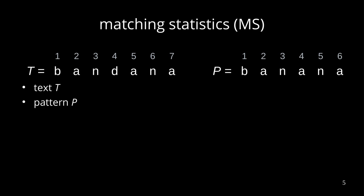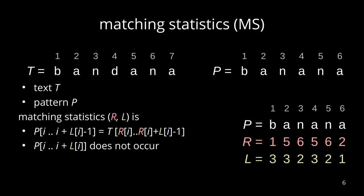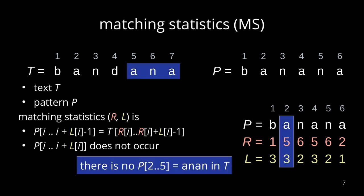More formally, given a text T and a pattern P, what we want to compute are two arrays R and L, such that we know at the i-th position of the pattern the longest common prefix with all text positions. Having R and L, for instance, we know at position 2 that the string ANA appears in the text at position 5, but there is no occurrence of ANAN appearing in the text.